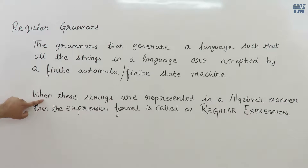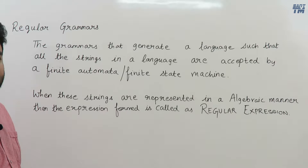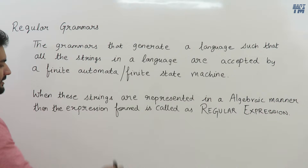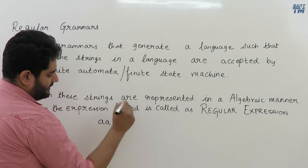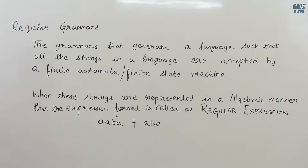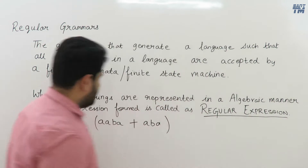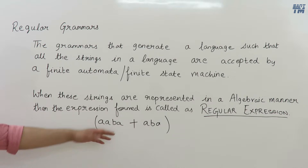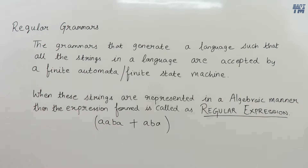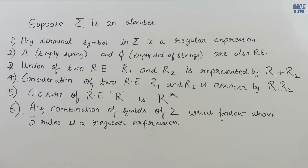When strings are represented in algebraic manner — that means two or more strings are added, subtracted, or multiplied with each other — any algebraic operation applied on strings forms what is called a regular expression. For example, if we have strings aa, ba, and a, and we apply algebraic plus on them, that combination is a regular expression. The strings must belong to a language generated by a regular grammar.